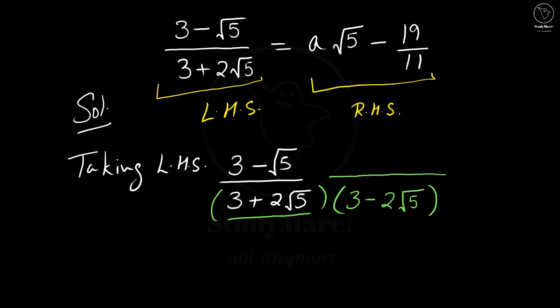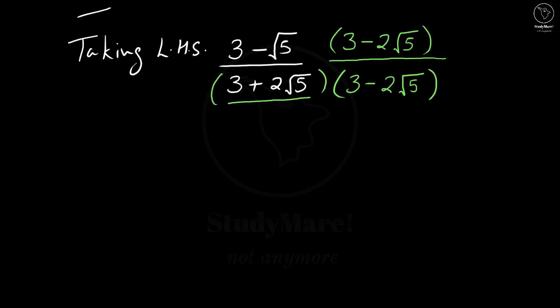In order to keep the value of the expression unchanged, we multiply the same rationalization factor in the numerator as well, so that the value remains the same. You can see that (3 minus 2 root 5) upon (3 minus 2 root 5) is nothing but 1, and any number multiplied by 1 always gives us 1. Now in the numerator we have (3 minus root 5) and (3 minus 2 root 5) — we cannot use any identity here, so we are simply going to expand the bracket.